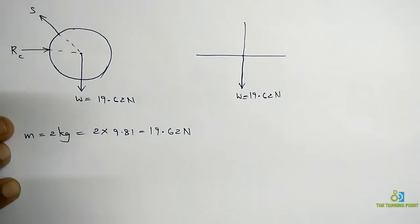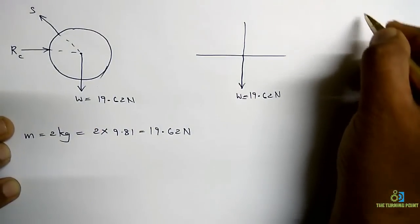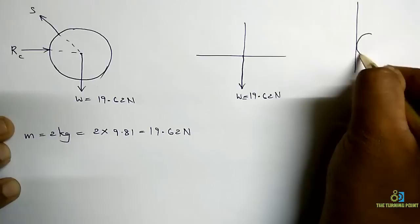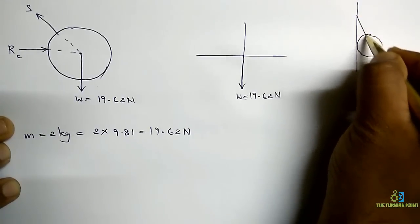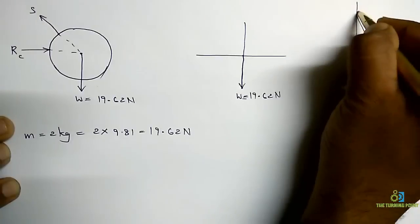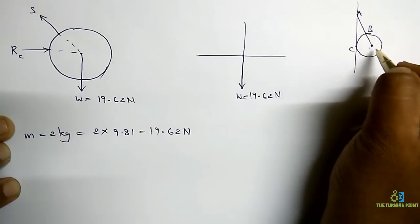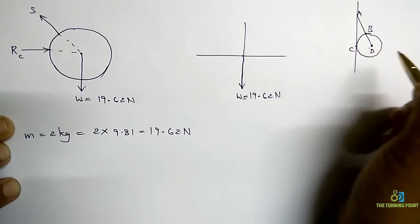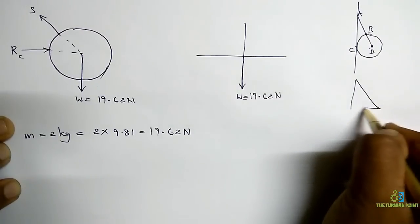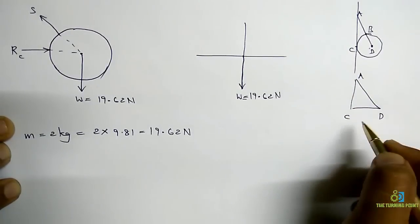So if you observe the given figure, it is like this. So this is the string AB and this is the center. This is the point D. So if you consider this point as D. Now A, C, D in the form of a right angle triangle. Right.